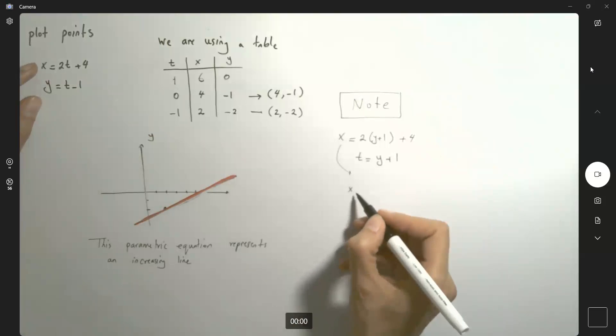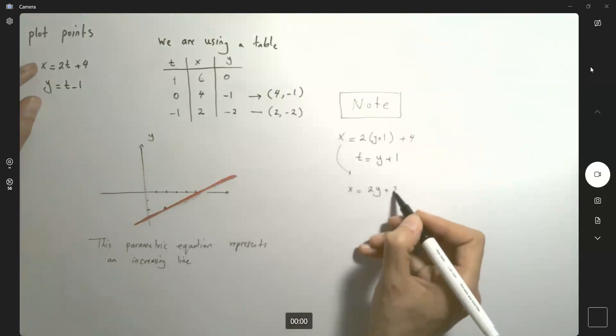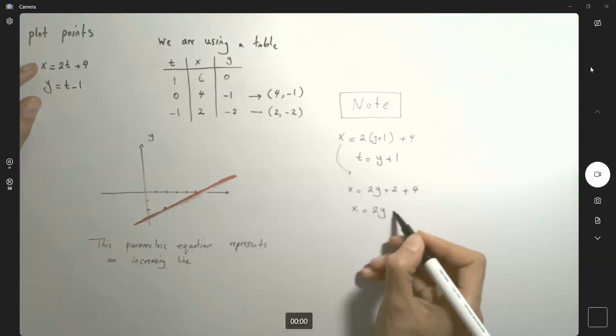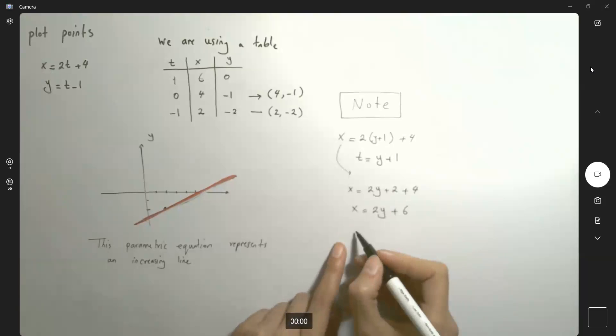And from the second equation, t is y plus 1. Just substitute this here. So x becomes 2 times (y + 1) plus 4, or x is 2y plus 6.